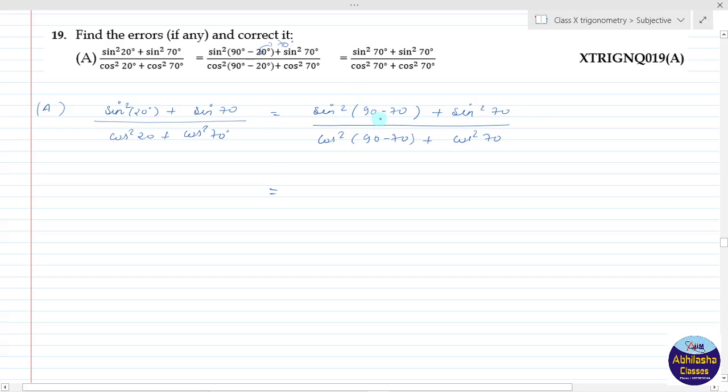See, sin squared of 90 minus 70 becomes cos theta, cos theta. And cos of 90 minus theta becomes sin theta.